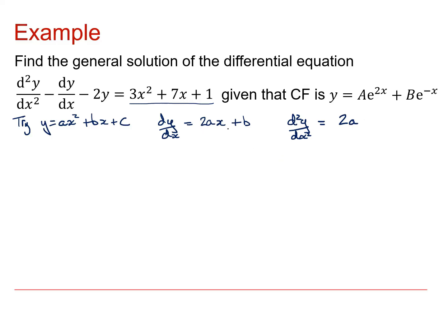Now, if I plug these bits in to the left-hand side, I'm going to get 2a minus (2ax plus b) minus 2(ax² plus bx plus c). And that I want to be equal to 3x² plus 7x plus 1.